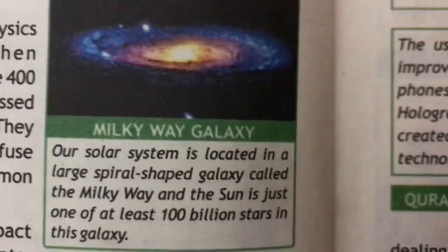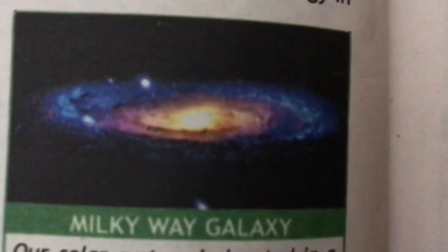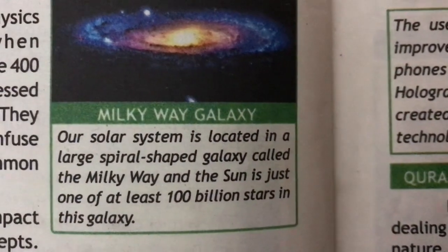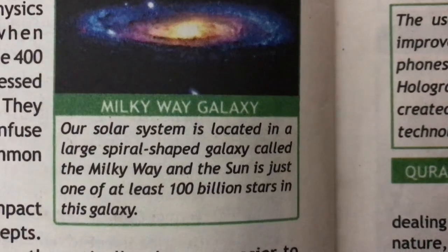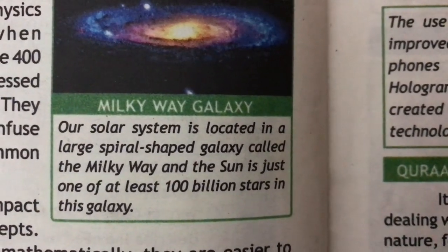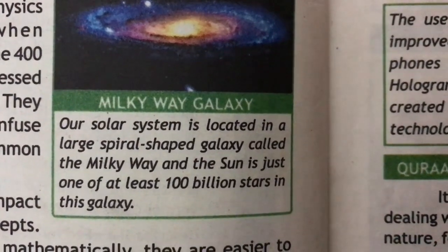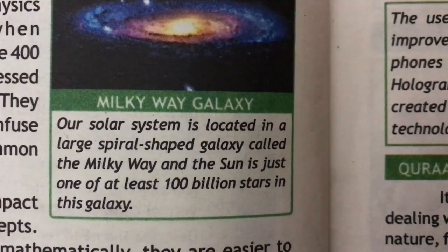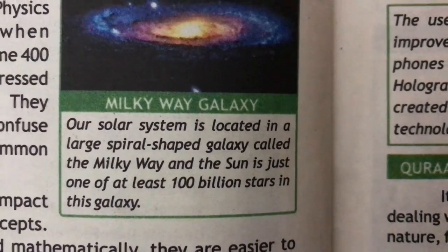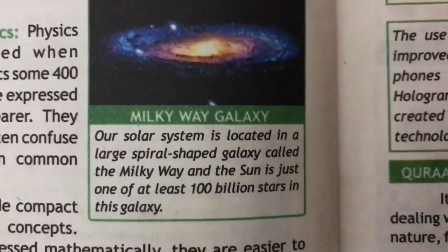This is the Milky Way galaxy. Our solar system is located in a large spiral-shaped galaxy called the Milky Way, and the Sun is just one of at least 100 billion stars in this galaxy.